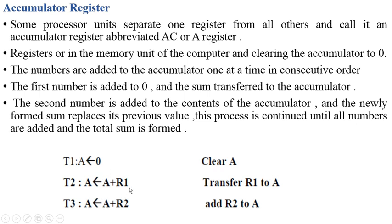At t2, the current value of A (which is 0) is added with the value at register R1. The resultant value from this ALU addition is stored back into accumulator register A itself. At time instant t3, a new register content R2 is added with the previous resultant value of A. At each time instant, the new resultant value is accumulated back into accumulator register A.